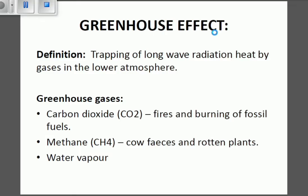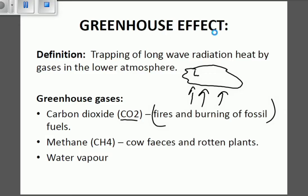The greenhouse gases are the gases that can be trapped in the lower atmosphere. The greenhouse effect is only created when there's a trapping of radiation from the sun in the lower atmosphere. The first greenhouse gas is carbon dioxide. Carbon dioxide comes from fires and the burning of fossil fuels. If you burn fossil fuels or create a fire here on Earth, you are creating more carbon dioxide which is emitted into the lower atmosphere, and that lower atmosphere traps the carbon dioxide, creating the greenhouse effect.